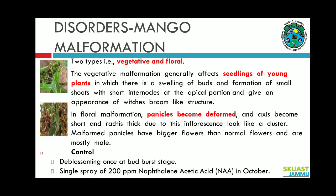For control of mango malformation, de-blossom once at the bud burst stage. Cut all the vegetative and floral portions affected with malformation from the plant and bury them outside the field. A single spray of 200 ppm napthaleneacetic acid in the month of October will also control this disorder.